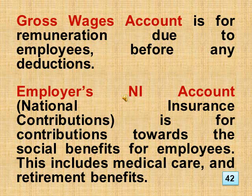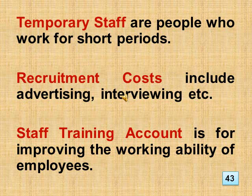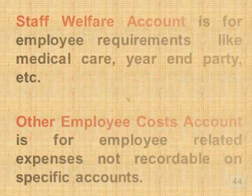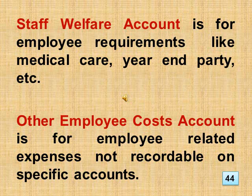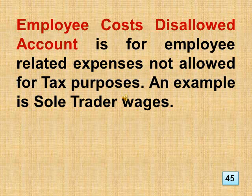Gross wages account is for remuneration due to employees before any deductions. Employers national insurance contributions account is for contributions towards the social benefits for employees, including medical care and retirement benefits. Temporary staff are people who work for short periods. Recruitment costs include advertising, interviewing, etc. Staff training account is for improving the working ability of employees. Staff welfare account is for employee requirements like medical care, year-end party, etc. Other employee costs account is for employee-related expenses not recordable on specific accounts. Employee costs disallowed account is for employee-related expenses not allowed for tax — an example is sole trader wages.